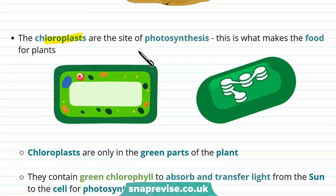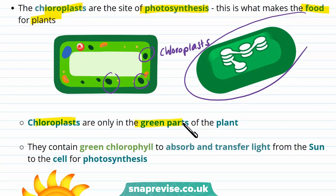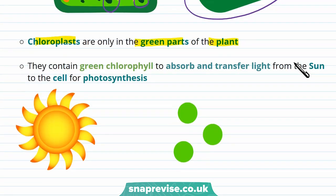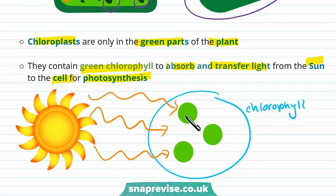Plants also have chloroplasts, which are the site of photosynthesis — they make the food for plants. Chloroplasts are only on the green parts of the plant, so the stem and the leaves. They contain green chlorophyll to absorb and transfer light from the sun to the cell for photosynthesis.